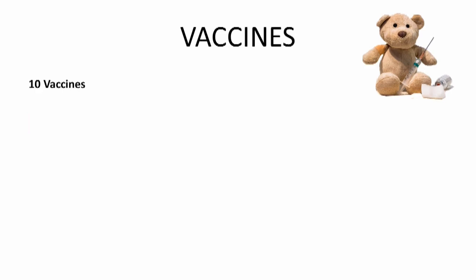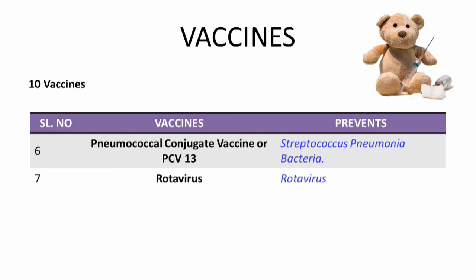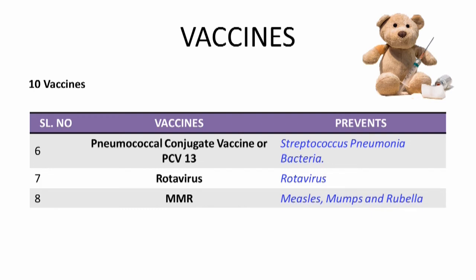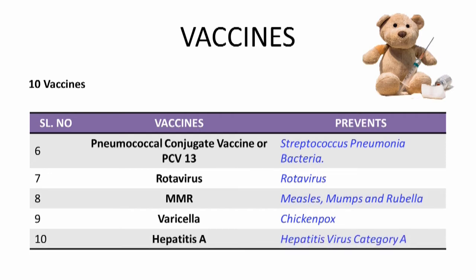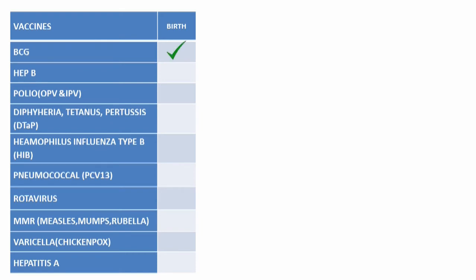Sixth, pneumococcal conjugate vaccine, or PCV13, is given against Streptococcus pneumoniae bacteria. Seventh, rotavirus vaccine is given to protect against rotavirus. Eighth, MMR is given to protect against measles, mumps and rubella. Ninth, varicella is given to protect against chickenpox — this is also called the chickenpox vaccine. Tenth, hepatitis A is given to protect against hepatitis A virus. Now let's look at the schedule, starting with birth.